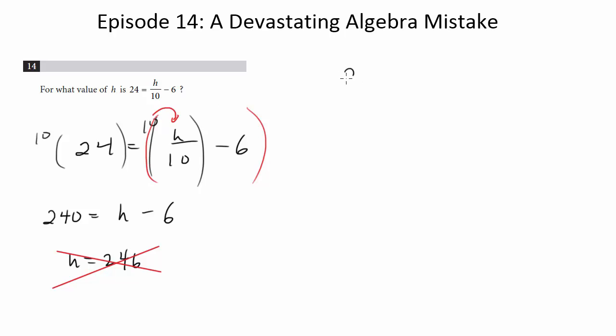Anyway, so we're going to come back here. We're going to have 24 equals h over 10 minus 6. So if you wanted to multiply both sides by 10, you could. You would get 240 equals h minus 60. So h would equal 300, and that would be your answer.